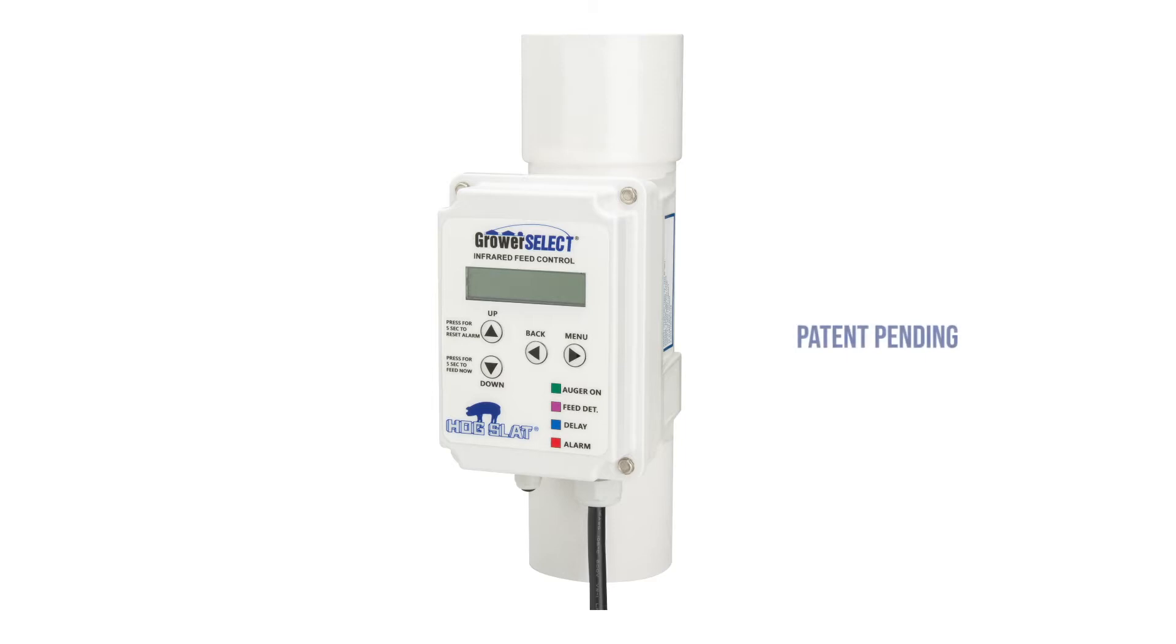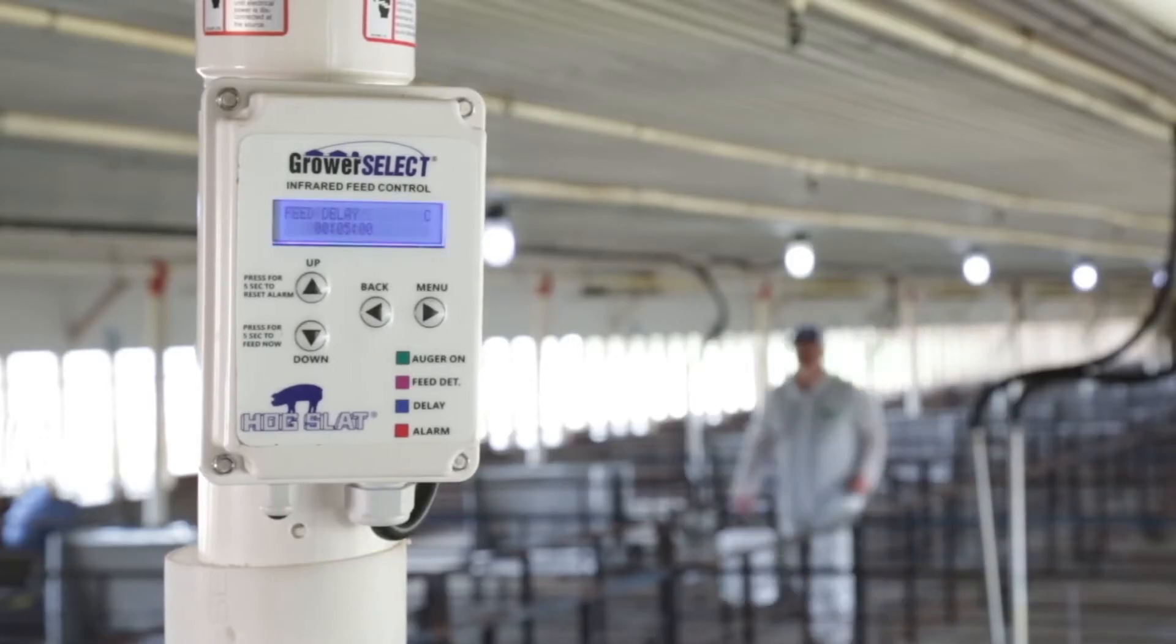Hogslat's newest feed line control, the HS820, uses infrared technology with a color-coded display to quickly inform the user of its operational mode.